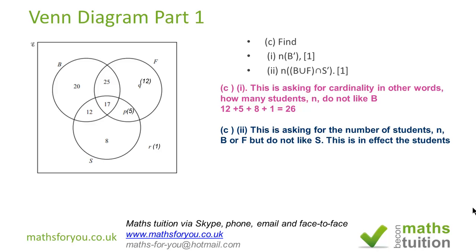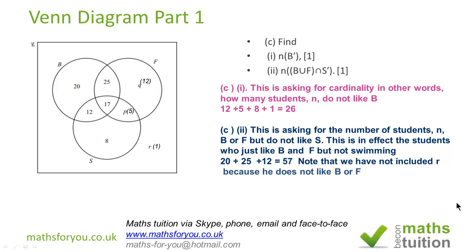Moving on, we want the number who like basketball or football and not swimming. So that will be the 20 from just basketball, 25 from football and basketball, and then 12, the Q. If you add those together you have 57. We have not included 1 from R because he does not like basketball or football, so that's not included.